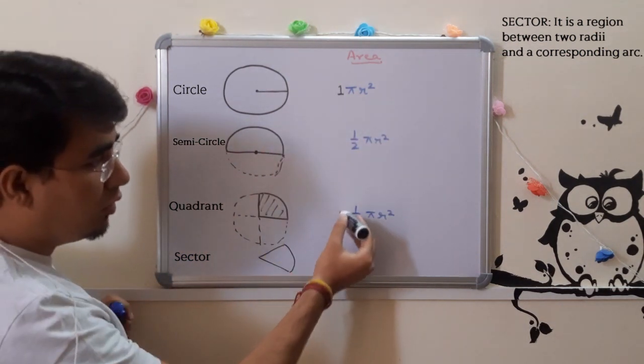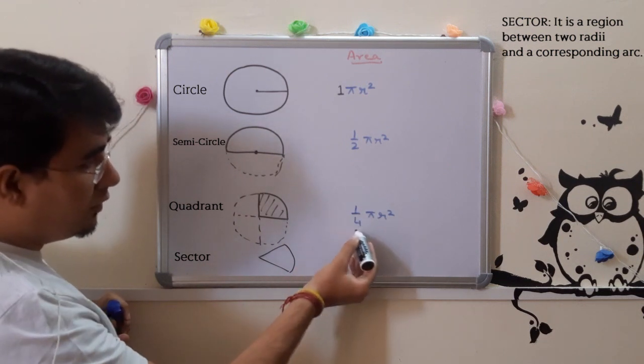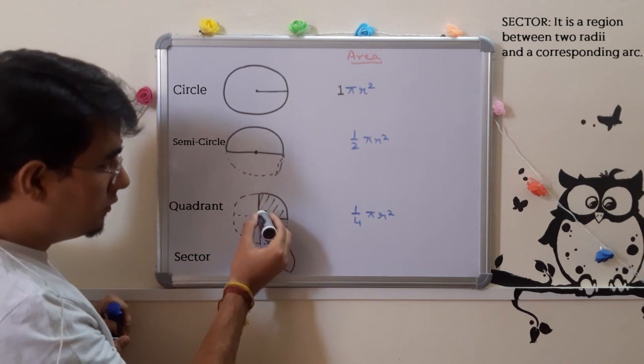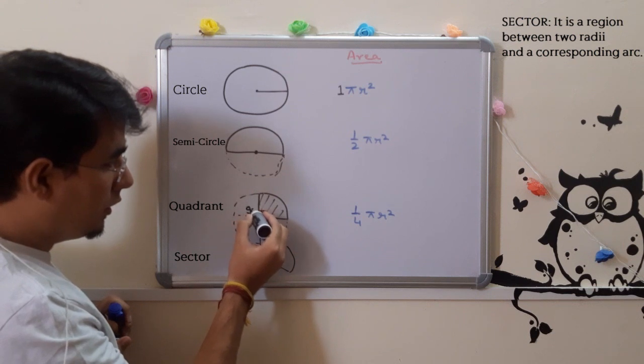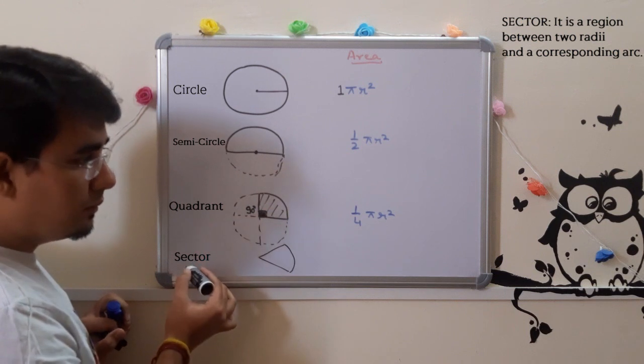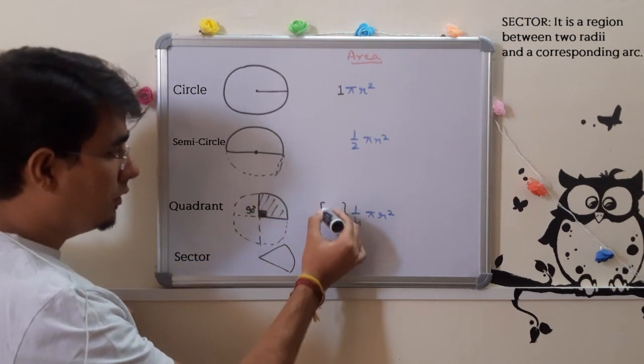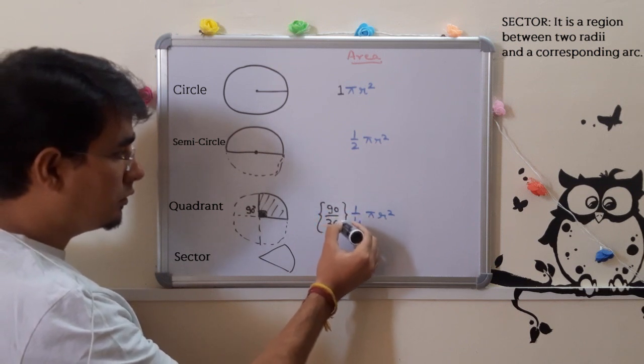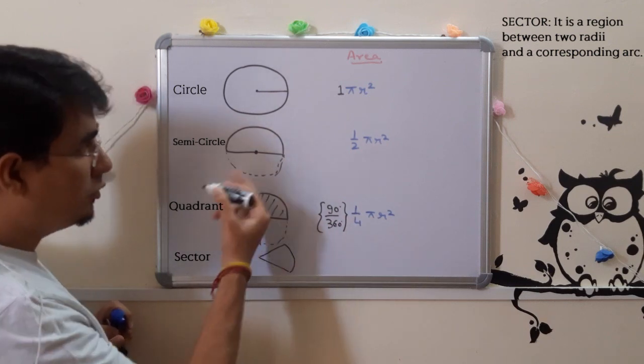So we have to think how 1/4 is coming. This 1/4 is depending upon this angle. Right now this angle is what? 90 degrees. And the full angle is what? 360 degrees. So we can say this is 90/360. If you reduce it, this is 1/4. Think about this.